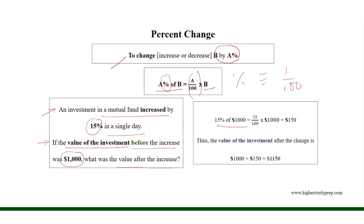Here, 15% of the investment, which was $1,000 — so 15% of $1,000 equals 15 over 100 times $1,000, which results in $150. Thus, the value of the investment after the change is $1,000 plus $150, and the addition results in $1,150.